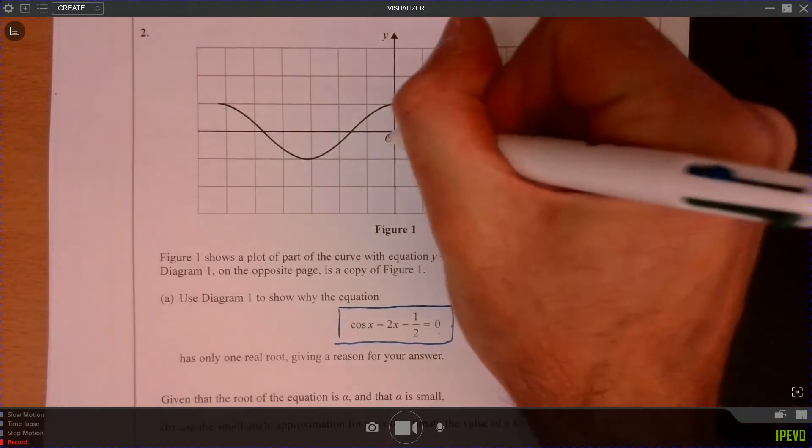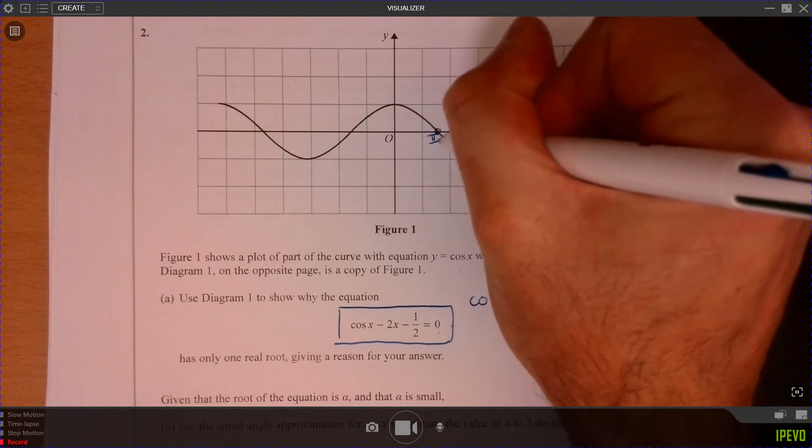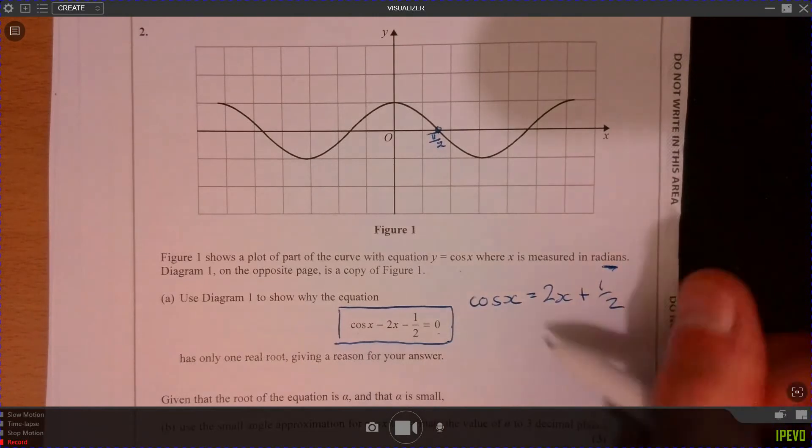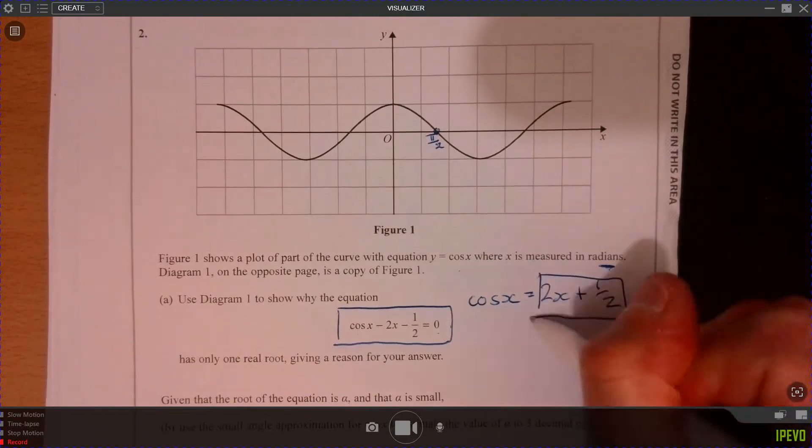Right, what have we got? Well, we know that's zero. We know that - it's like 90 degrees, isn't it? It's pi over 2, yeah? Okay, so if you just think about what this line is, just here.